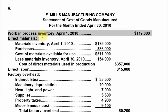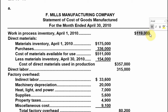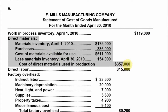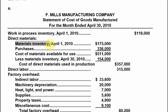First, we begin with work in process inventory at the beginning. We put this number on the right side because it will be used to transfer the cost of goods sold at the end. Next, we have direct material, which is calculated separately.